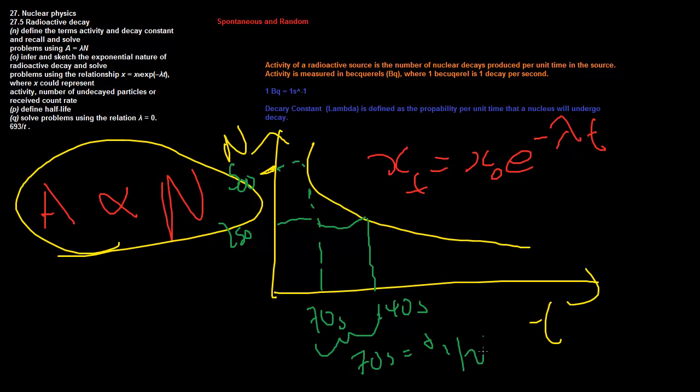And because of the nature of this, because activity depends on the number left, no matter where you are on your continuum of decay, at any point, if you count the time it takes for the particles to become half, so we count again to like 125, this will take another 70 seconds, which will make it 210 seconds.